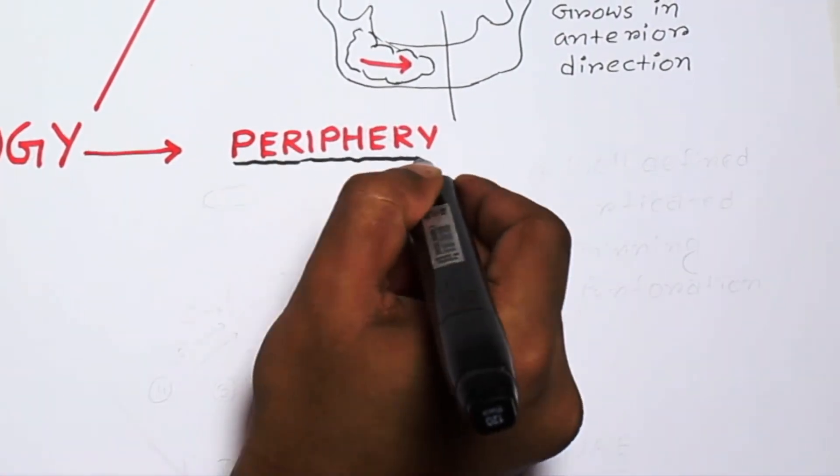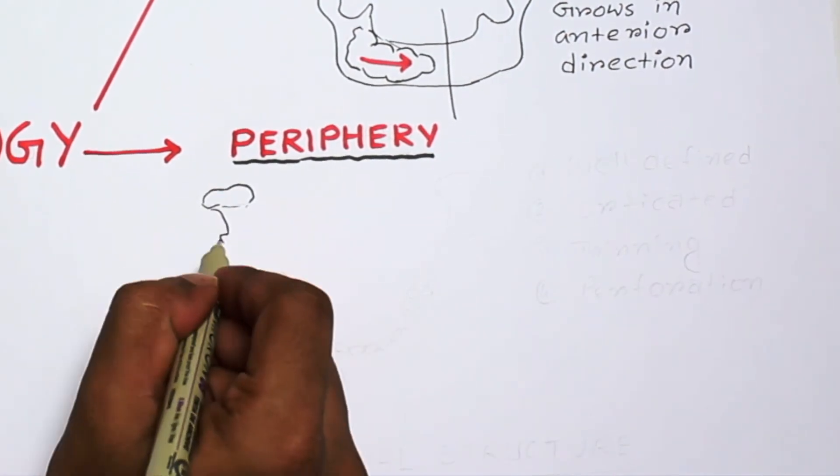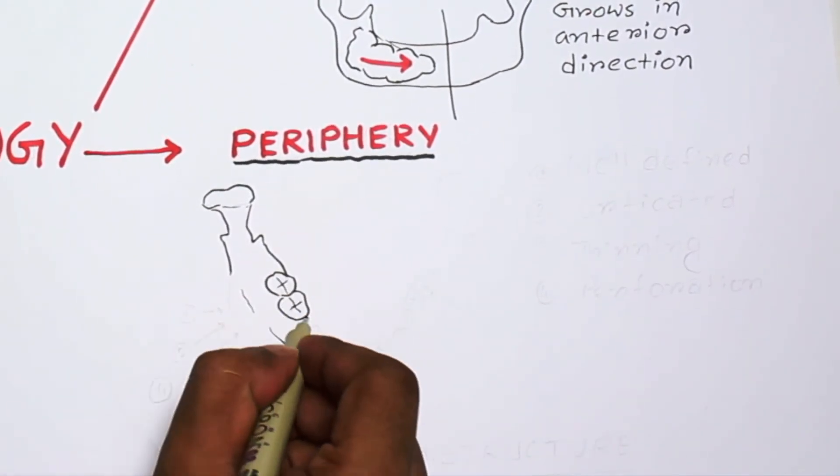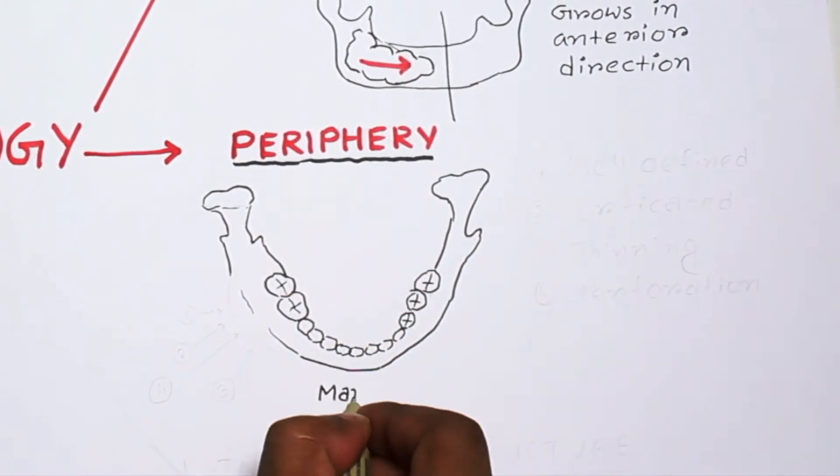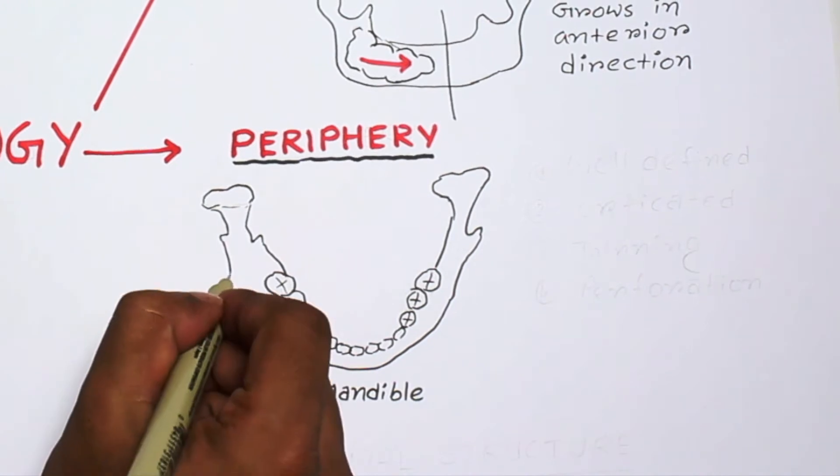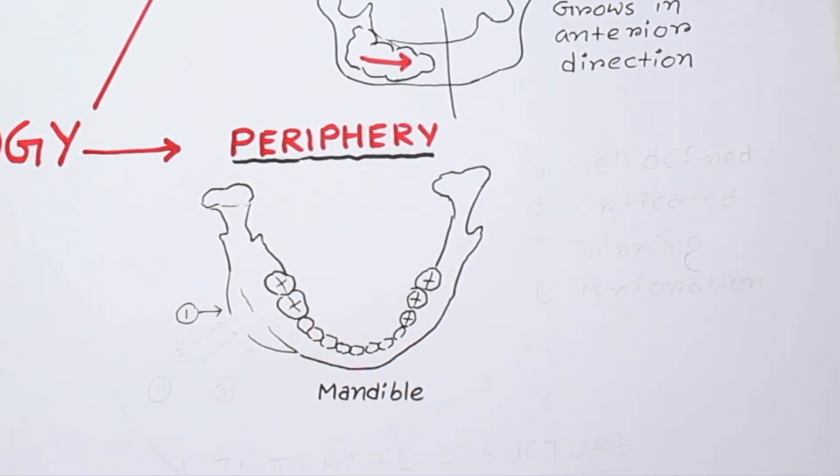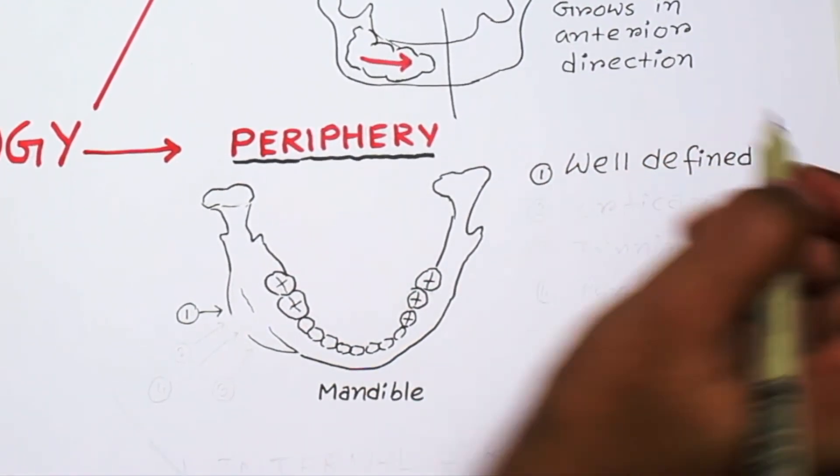Now let's discuss the periphery. Here I am drawing a mandible in occlusal view. You can see that the periphery is well defined and in some instances it is corticated. Expansion can cause marked thinning and sometimes perforation.